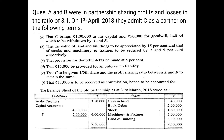The first term is that C brings Rs 1,00,000 as capital and Rs 50,000 for goodwill, half of which is to be withdrawn by A and B. So C is bringing Rs 1,50,000 in total — Rs 1,00,000 for capital and Rs 50,000 for goodwill. The goodwill brought by C is to be distributed among the sacrificing partners in the sacrificing ratio.